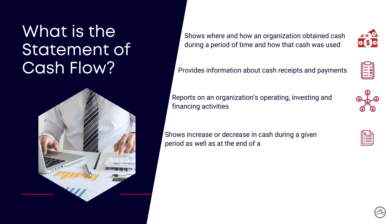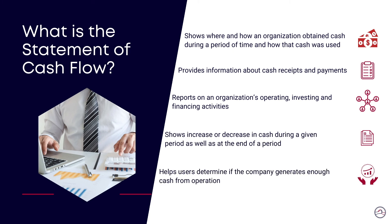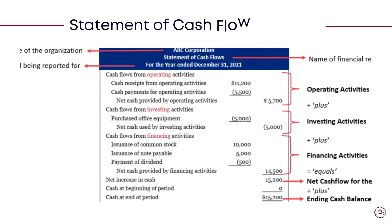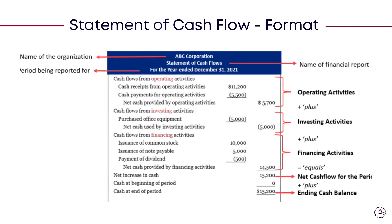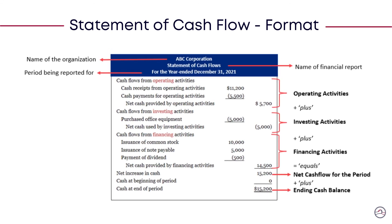In terms of its format, the information at the top is the same as an income statement. The main body organizes activities in three categories. Operating activities represent the net balance between cash receipts and expenses incurred from day-to-day operations. Investing activities show an organization's acquisition of long-term investments. The sum of these three items equals the net increase or decrease in cash. By adding this to the cash available at the beginning, we can determine the amount of cash remaining at the end of a period.